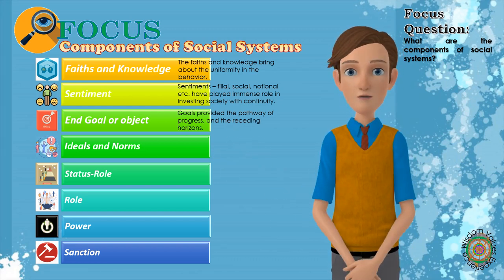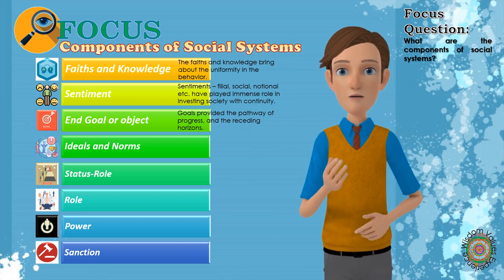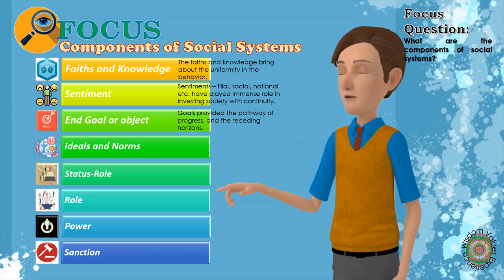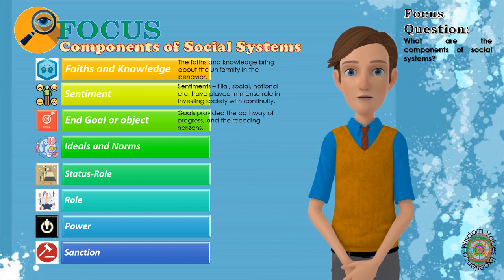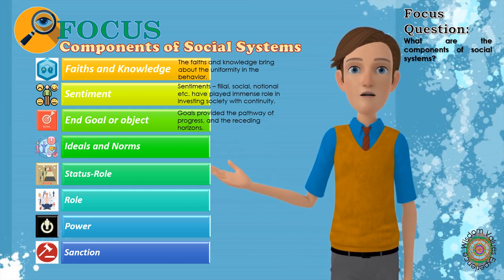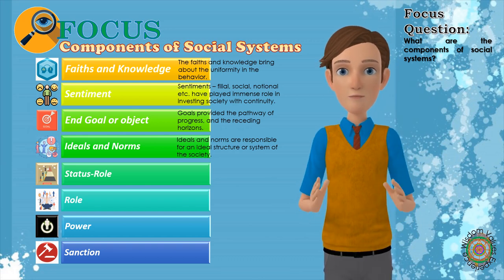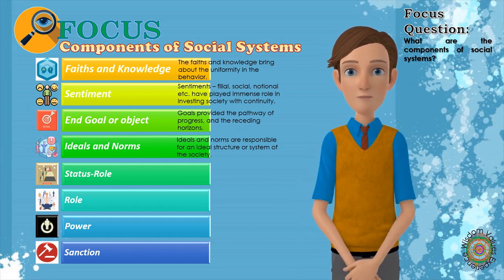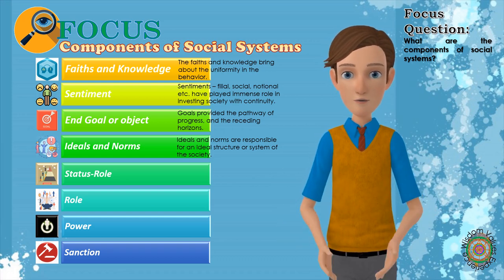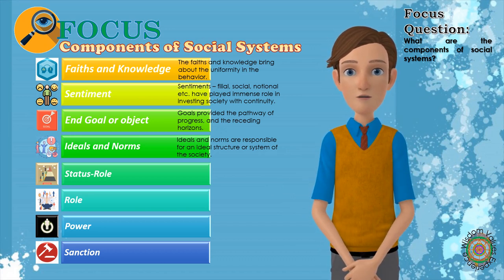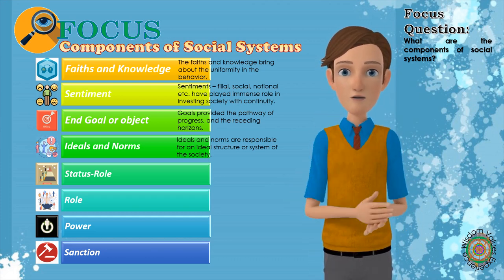4. Ideals and Norms: The society lays down certain norms and ideals for keeping the social system intact and for determining the various functions of different units. These norms prescribe the rules and regulations on the basis of which individuals may acquire their cultural goals and aims. In other words, ideals and norms are responsible for an ideal structure or system of the society. Due to them, human behavior does not become deviant and people act according to the norms of the society. This leads to organization and stability. These norms and ideals include folkways, customs, traditions, fashions, morality, religion, etc.